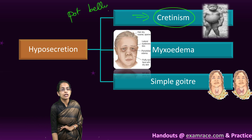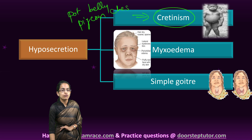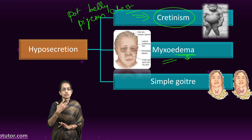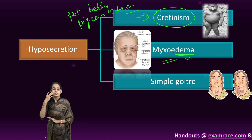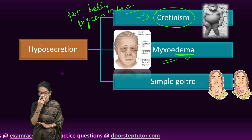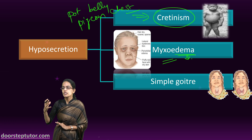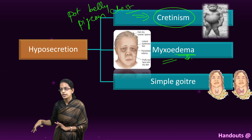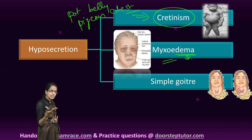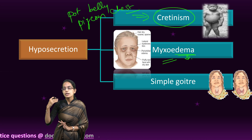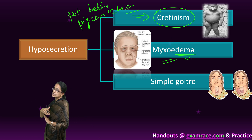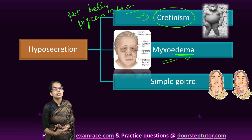Pot belly and pigeon chest are two important characteristics of a child with cretinism. The next disorder is myxedema. As the name suggests, there is water retention and swelling — typically in the periorbital area below the eyes. The face is dry and swollen, with swelling on the hands and body, and waxy or puffy skin. There is also feeble-mindedness and deposition of subcutaneous mucus fluid, which means fluid deposited below the skin, leading to the edema seen in myxedema.